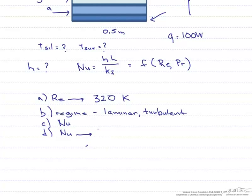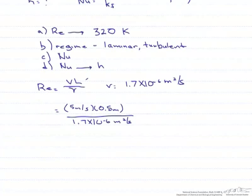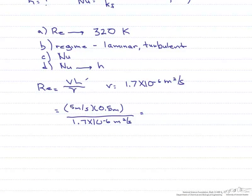Let's start with the Reynolds number, which is the velocity times the length of the plate, divided by the kinematic viscosity. And when we look that up, at 320 Kelvin, we find that that's 1.7 times 10 to the minus 6 meters squared per second. And so our Reynolds number ends up being 1.4 times 10 to the sixth.